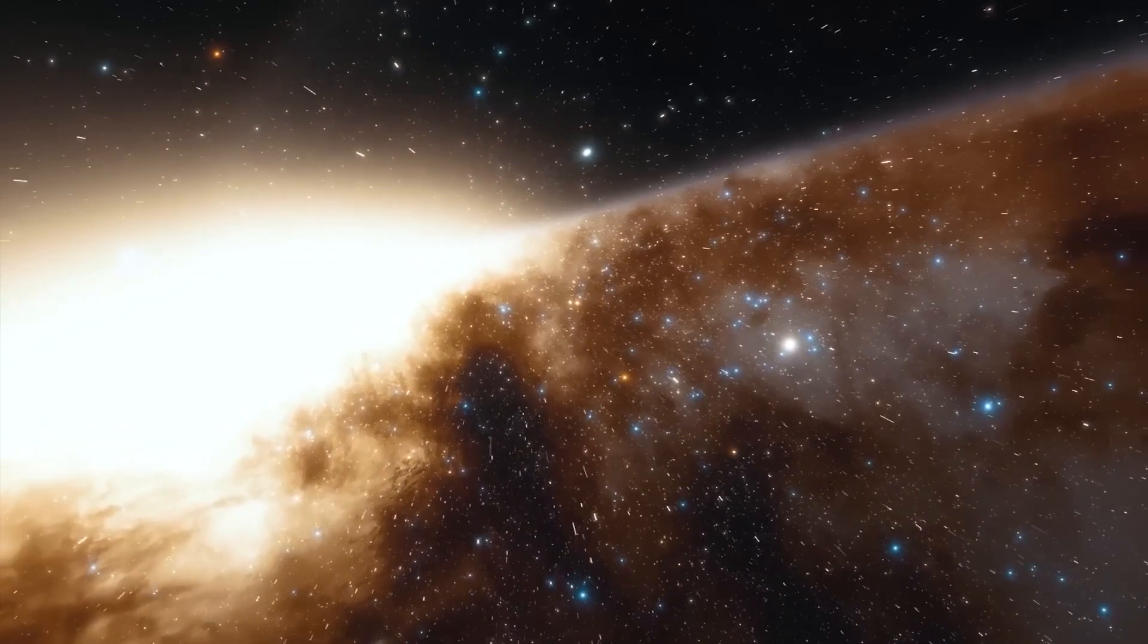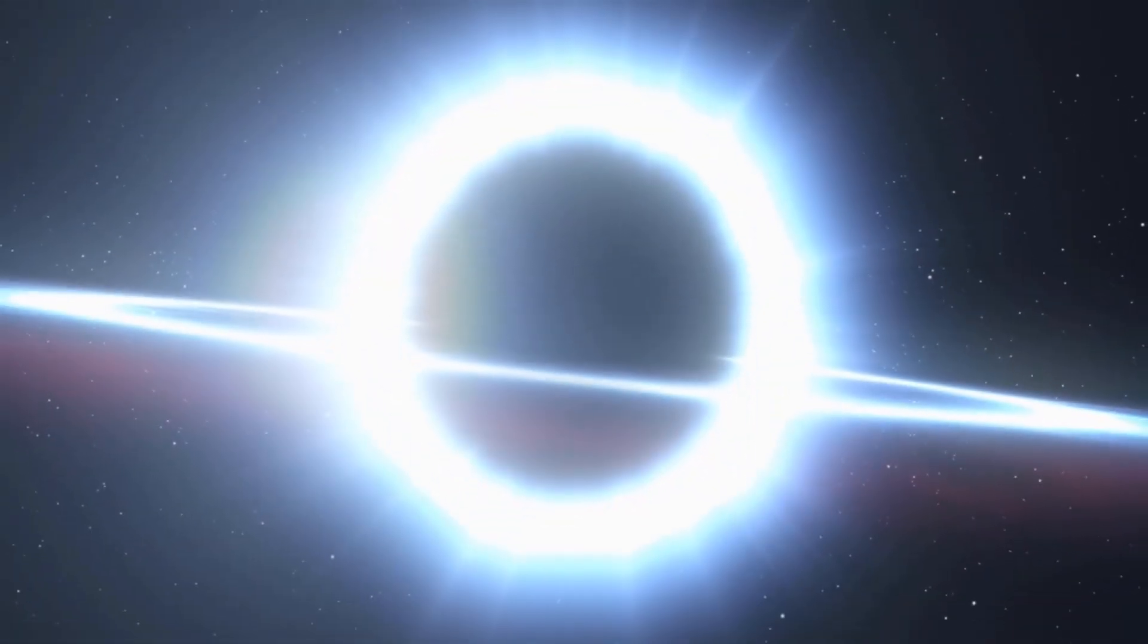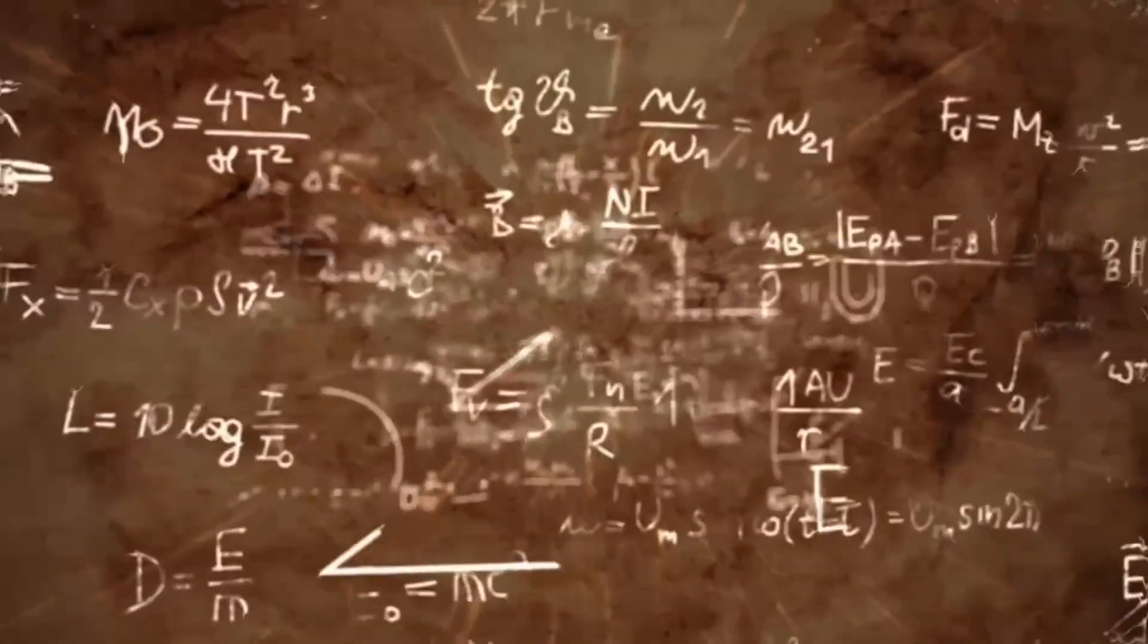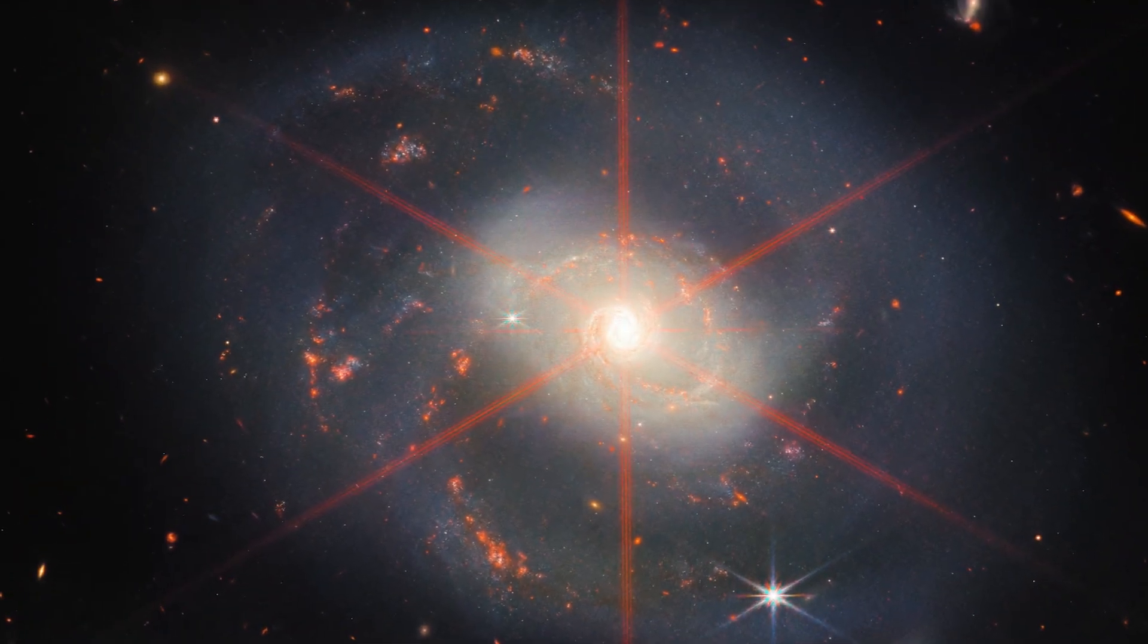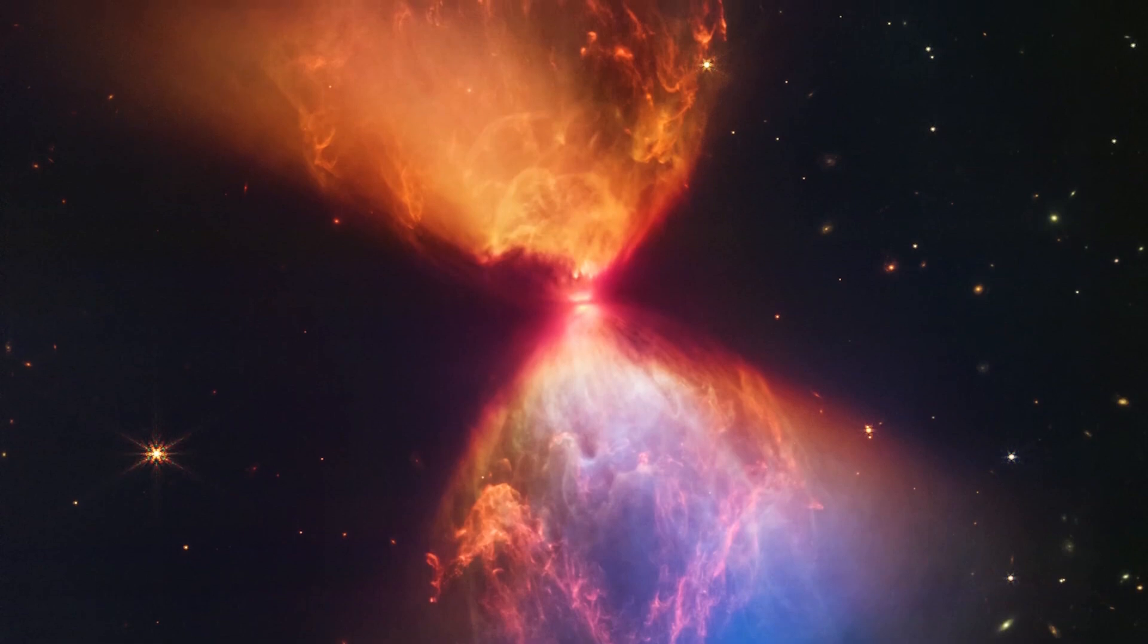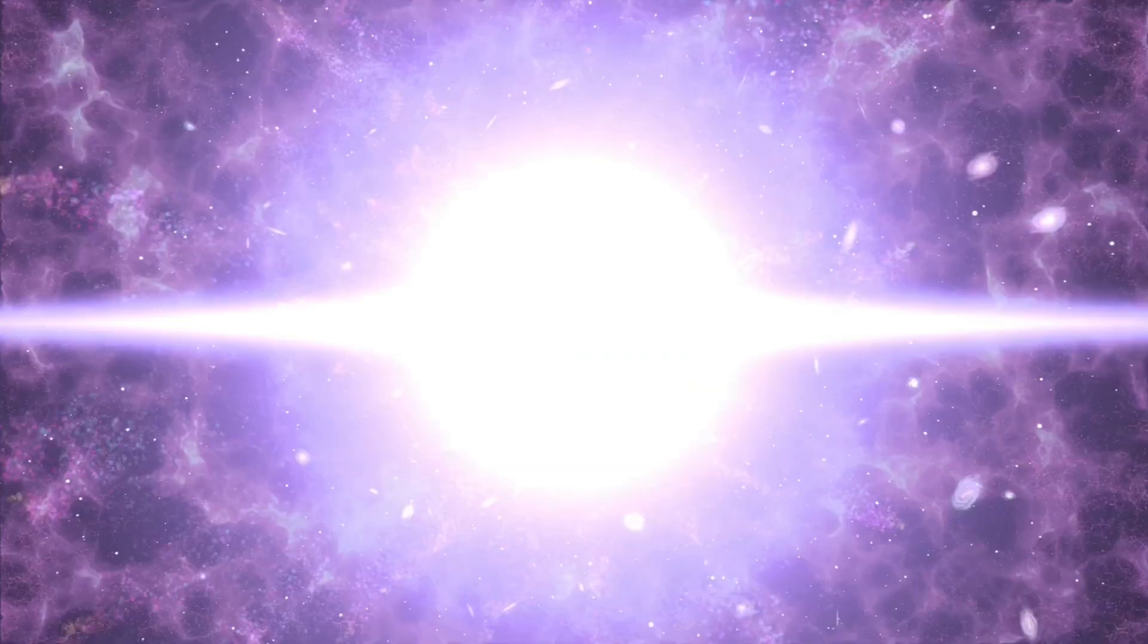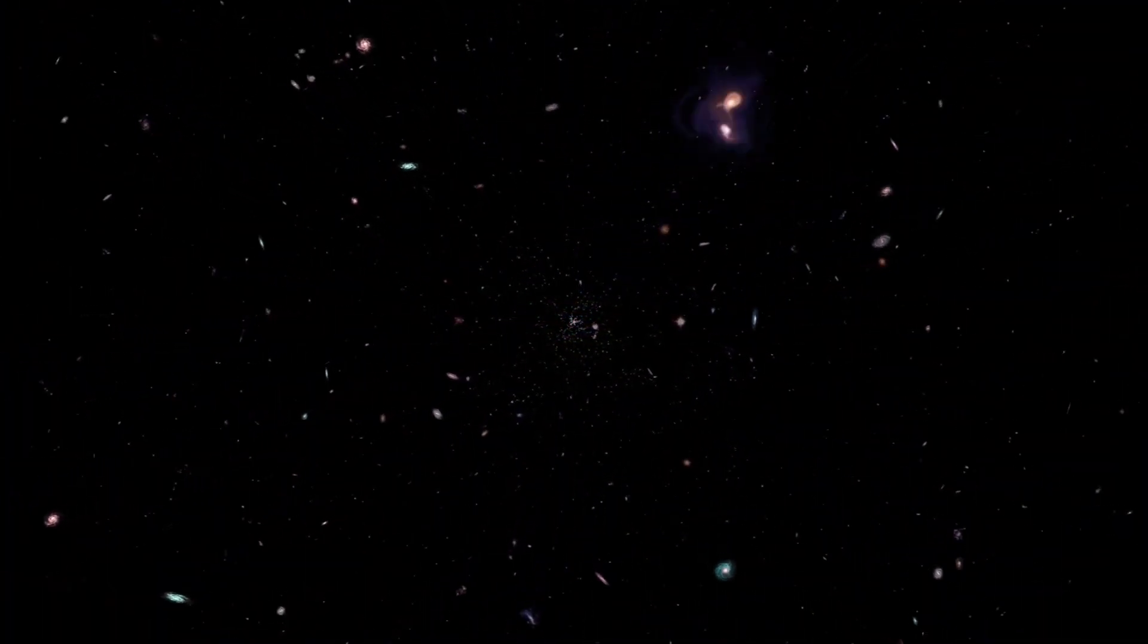Moreover, the smoothness of these galaxies is totally unexpected. According to the Big Bang Theory, galaxies should show irregularities and variations in their structures due to the dynamics of their formation and evolution. However, the images reveal unusually smooth galaxies without the level of complexity and roughness that one would normally expect to see in galaxies of their age. This defies the expected time sequence for the formation and evolution of galaxies within the framework of the Big Bang Theory.